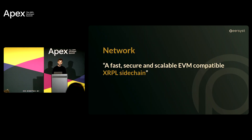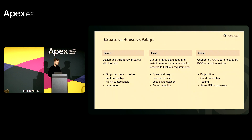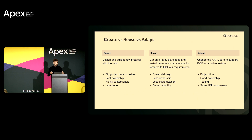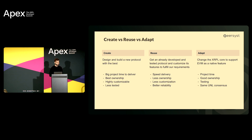For the network, we want a fast, secure, and scalable EVM-compatible XRPL sidechain — a last-generation blockchain. We don't want to reuse the Ethereum core, which is a little outdated. We have three paths: create a new one from scratch, grabbing recent research and creating our own protocol — but that's a huge amount of resources and development time. We could also adapt the XRPL core to support EVM natively by adding new transaction types, then deploy that as a sidechain.